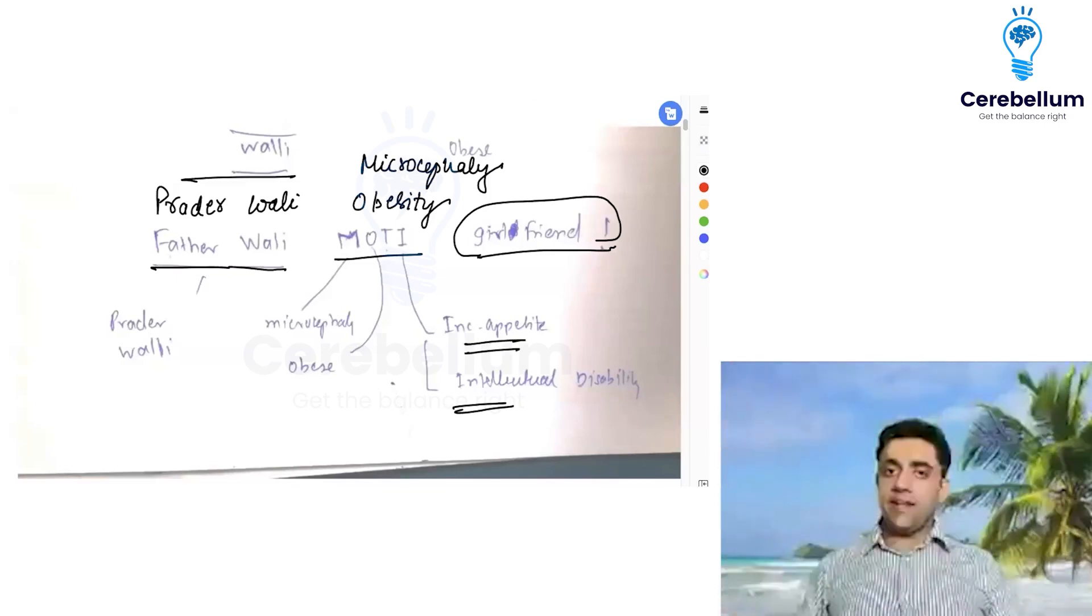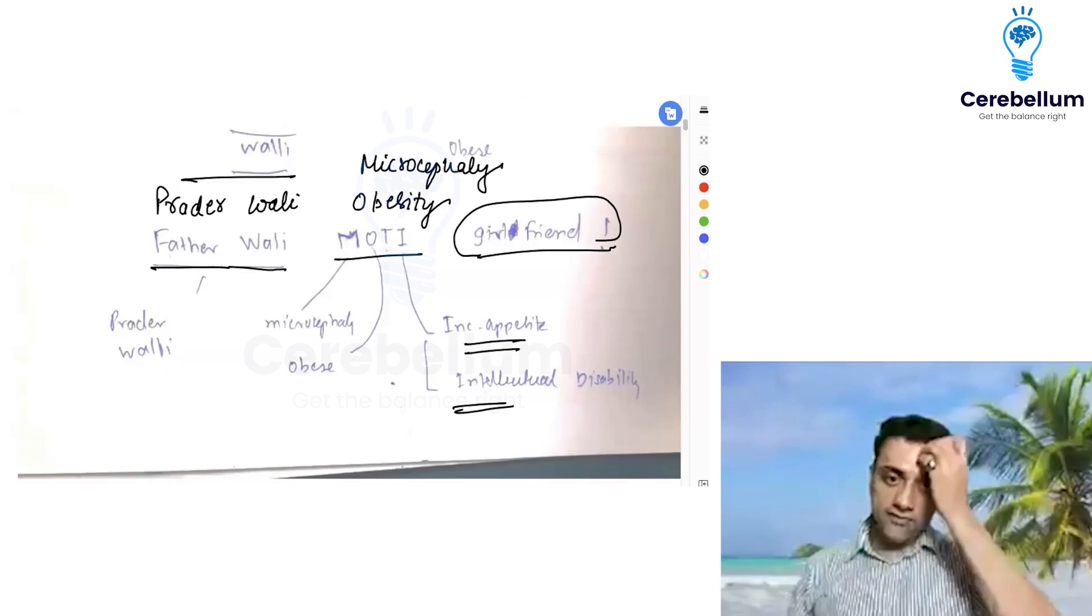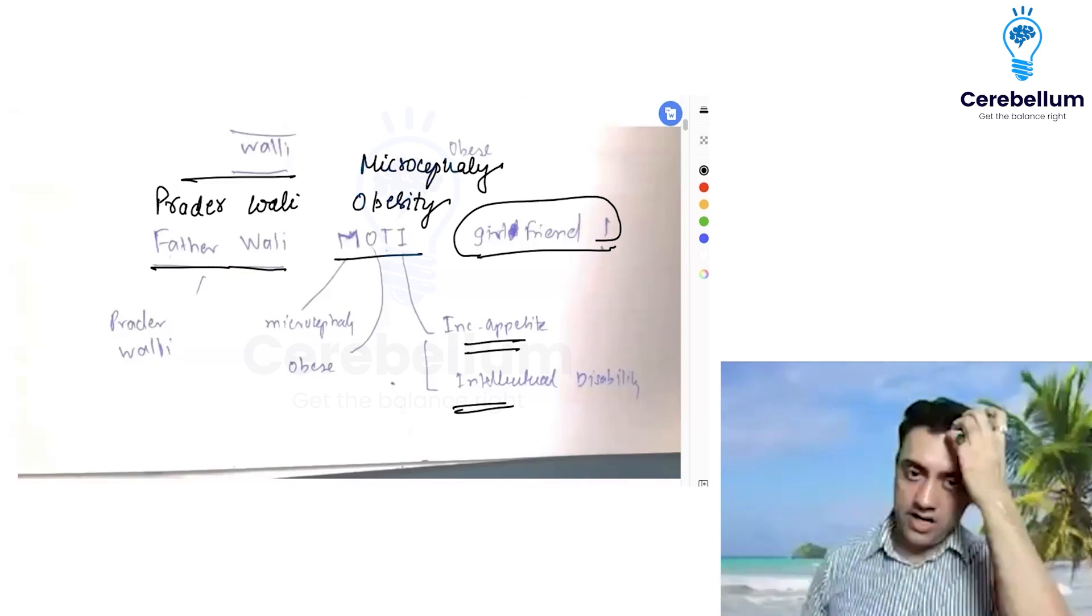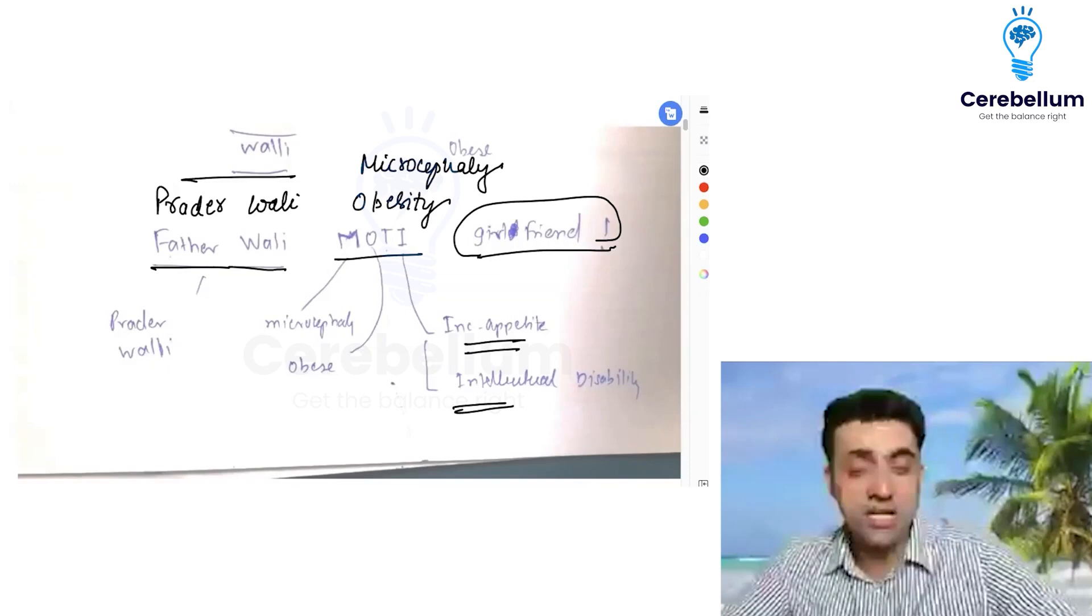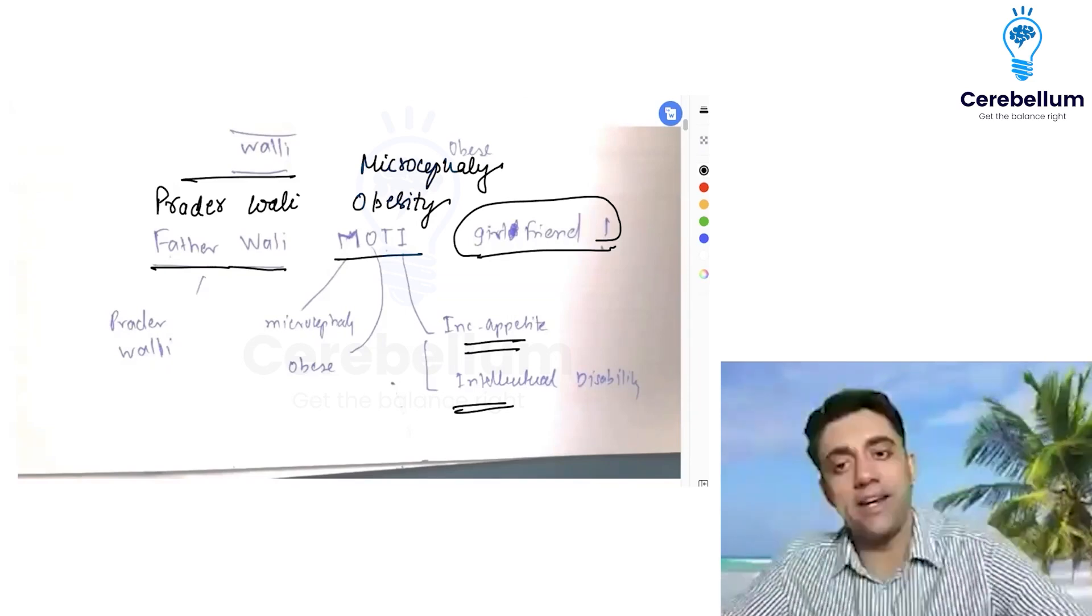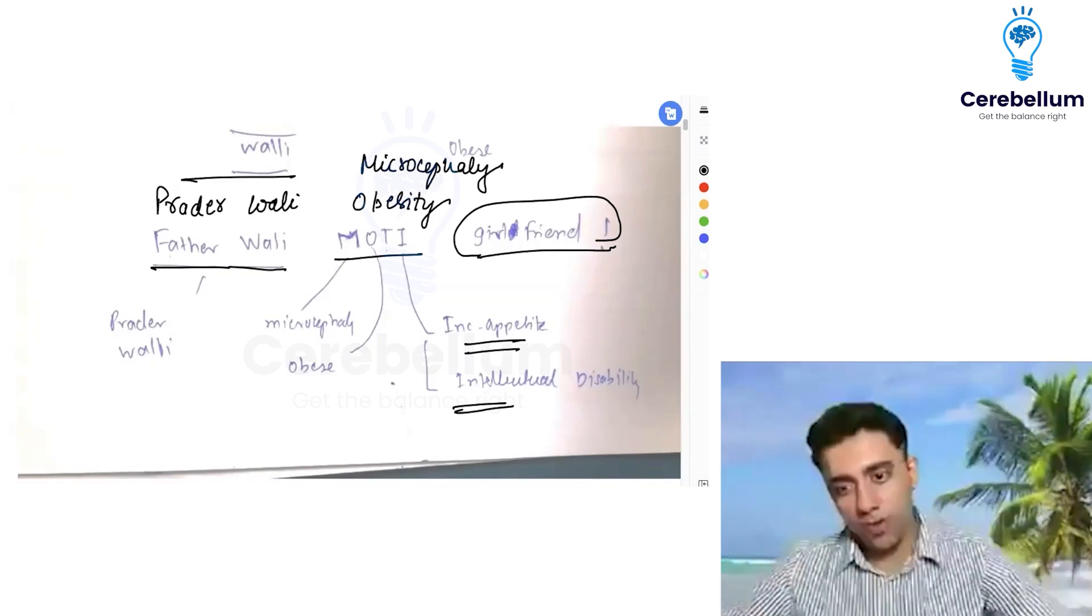So Prader-Walli MOTI Girlfriend is the mnemonic for Prader-Willi syndrome. MOTI is important: M for microcephaly, O for obesity, I for intellectual disability and increased appetite. These are the important points.